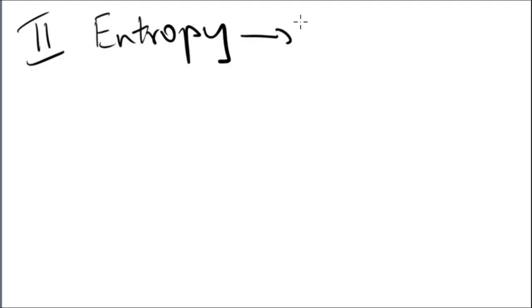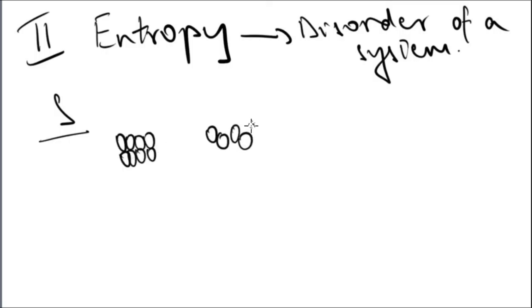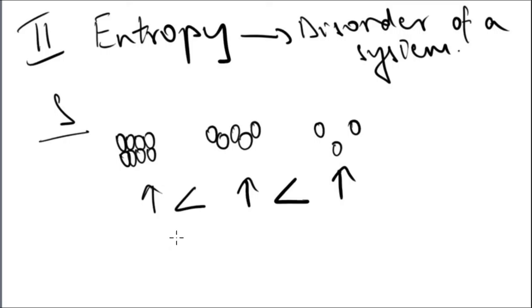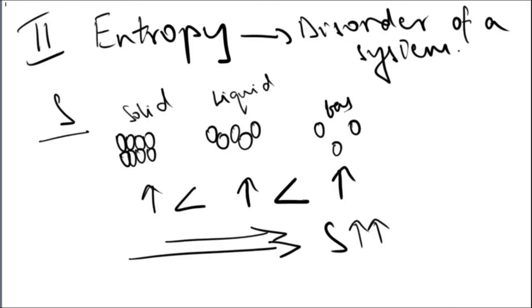Now let's speak about entropy. It is very important. Entropy is the disorder of a system. So depending on how much a system is disorganized, the entropy increases. It is denoted as S. Here we have a solid, then a liquid, and then a gas. The molecules in a solid are tightly packed; in the liquid they're a bit loose, and in the gas they're really far apart. So there is more disorder in the gas than in the liquid than in the solid because they have more space to move around and be disorganized. So as you go from a solid towards a liquid and a gas, the entropy increases.